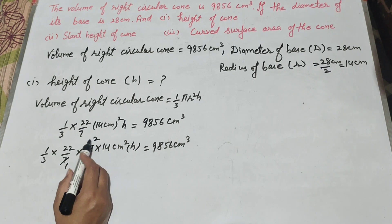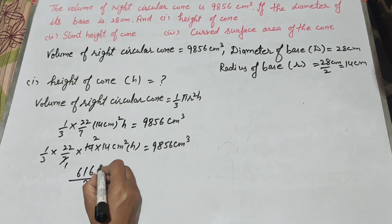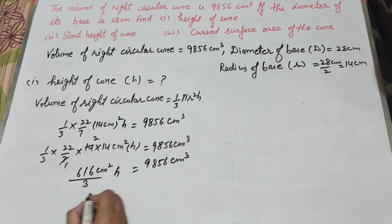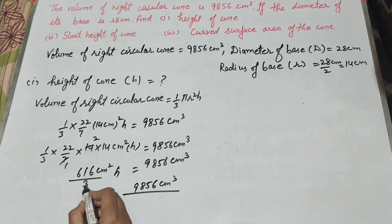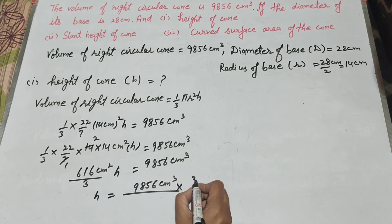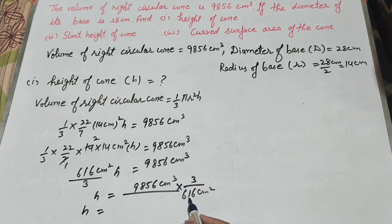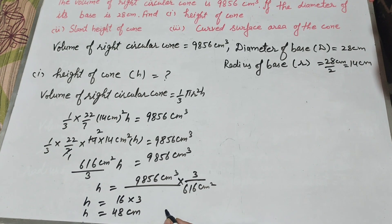7 and 14 are both cancelled on the table of 7. Now 22 multiplied by 2 is 44, and 44 multiplied by 14 is equal to 616. So 616 over 3 centimeter squared into h equals 9856 centimeter cube. We find h equals 9856 centimeter cube multiplied by 3 over 616 centimeter squared. 9856 divided by 616 gives 16, then 16 multiplied by 3: height is equal to 48 centimeter.